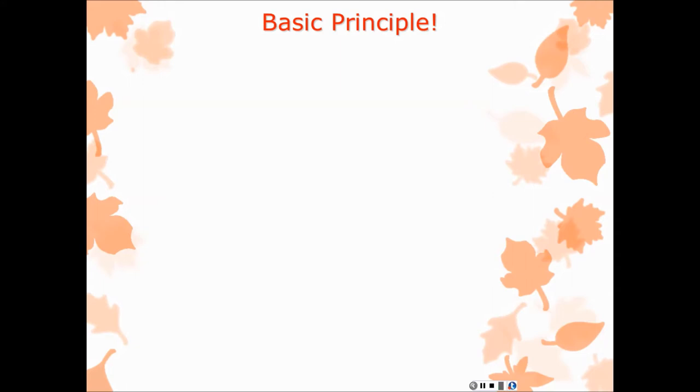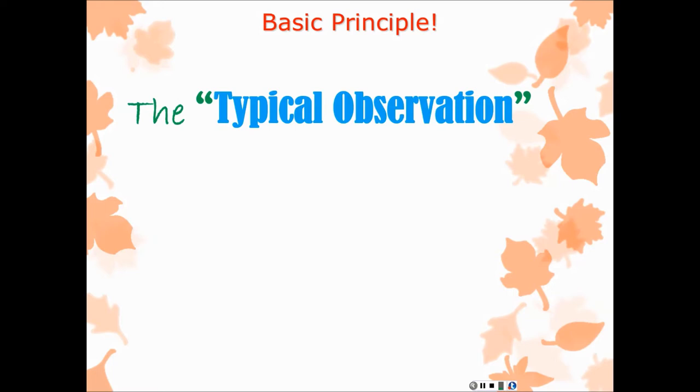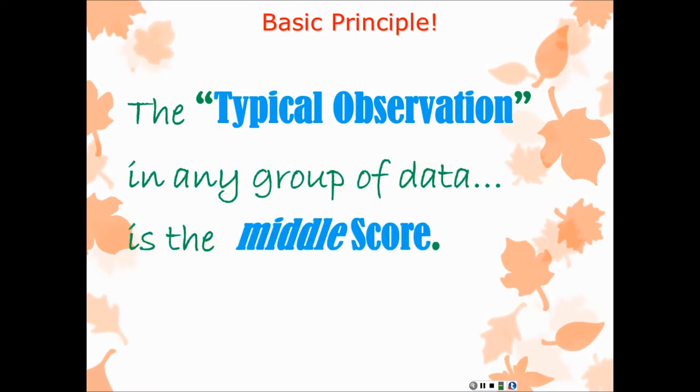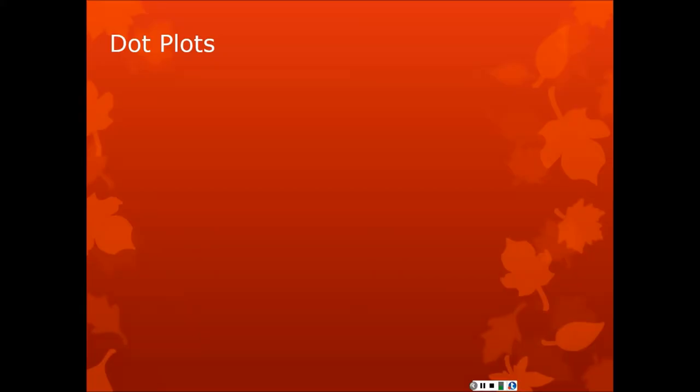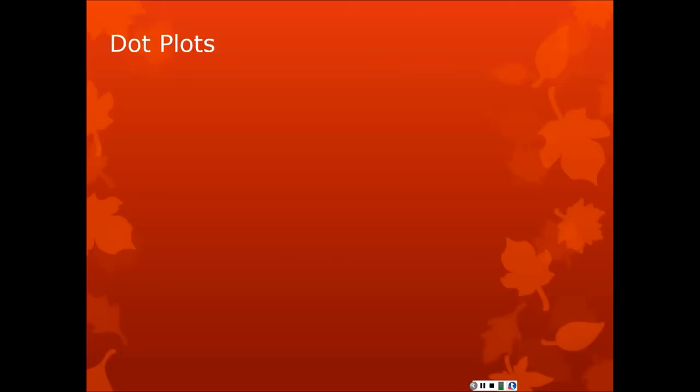And typical in number sense usually means the middle. The problem is, as I've mentioned, there are lots of middles. And there's not just mean, median, and mode. There's all sorts of flavors. Let's focus on this basic principle that will haunt us over and over again. The typical observation of any group of scores, any data, is a middle score.